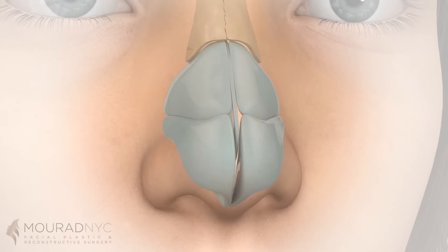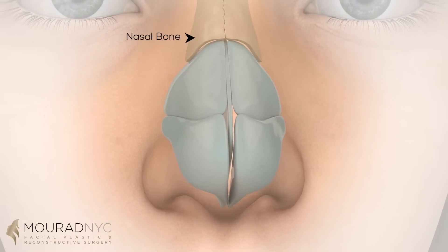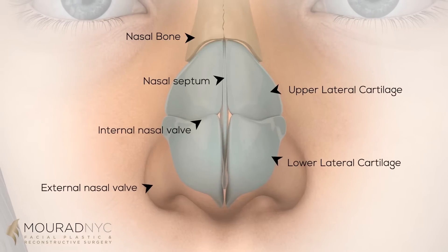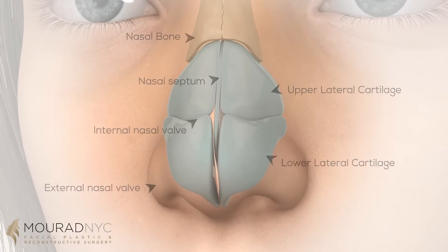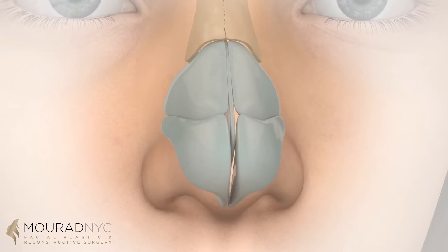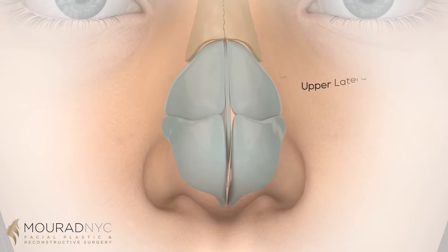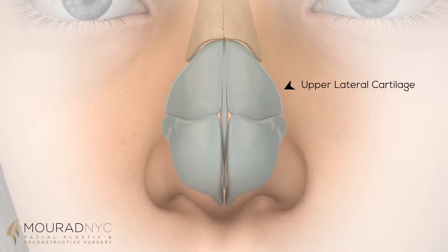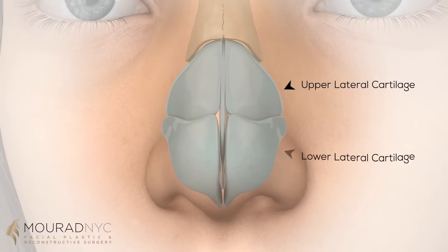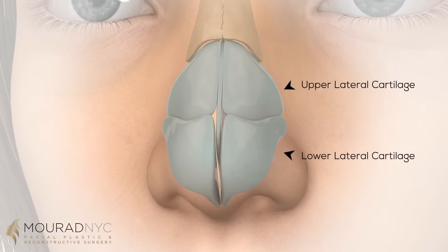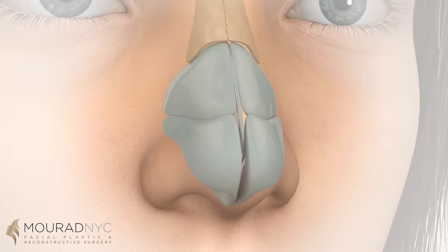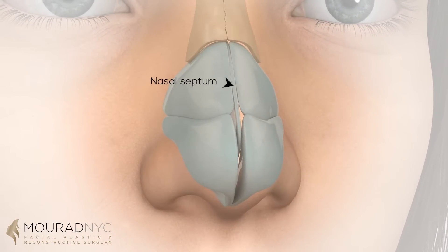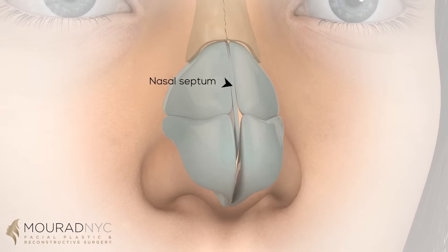Anatomy of the nose. The nose is made up of two bones that form the upper one-third of the nose and five cartilages that make up the lower two-thirds of the nose. The lower cartilages are comprised of two upper cartilages known as the upper lateral cartilages and two lower cartilages known as the lower lateral cartilages. In the midline of the nose is a septal cartilage that separates the left and right sides of the nose.